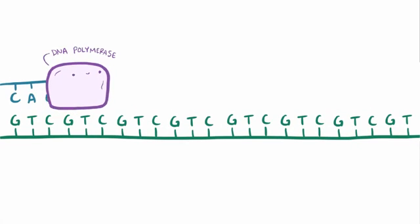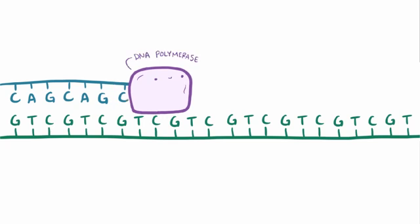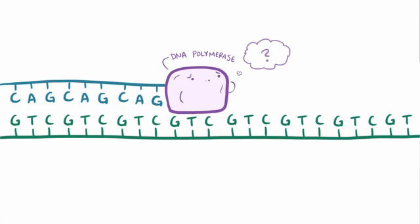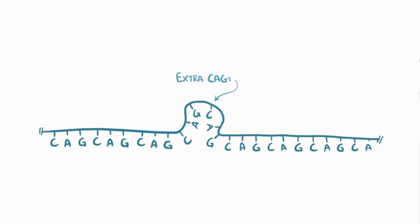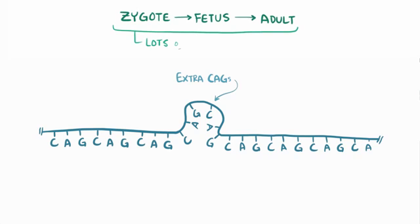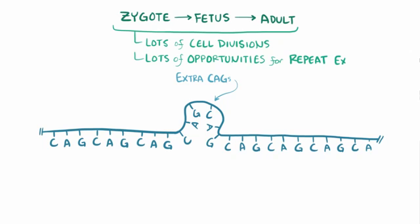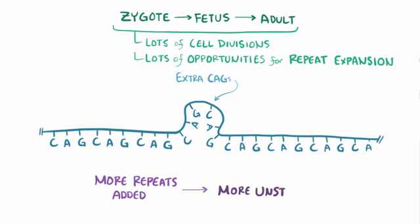When copying the HTT gene, DNA polymerase can basically lose track of which CAG it's on and accidentally add extra CAGs. Since as a zygote develops into a fetus and eventually into a full adult, by the time sperm and eggs are created, several dozen cell divisions — each with a round of DNA replication — have taken place, there have been a lot of opportunities for repeat expansion, and the more repeats that are added, the more unstable it gets.